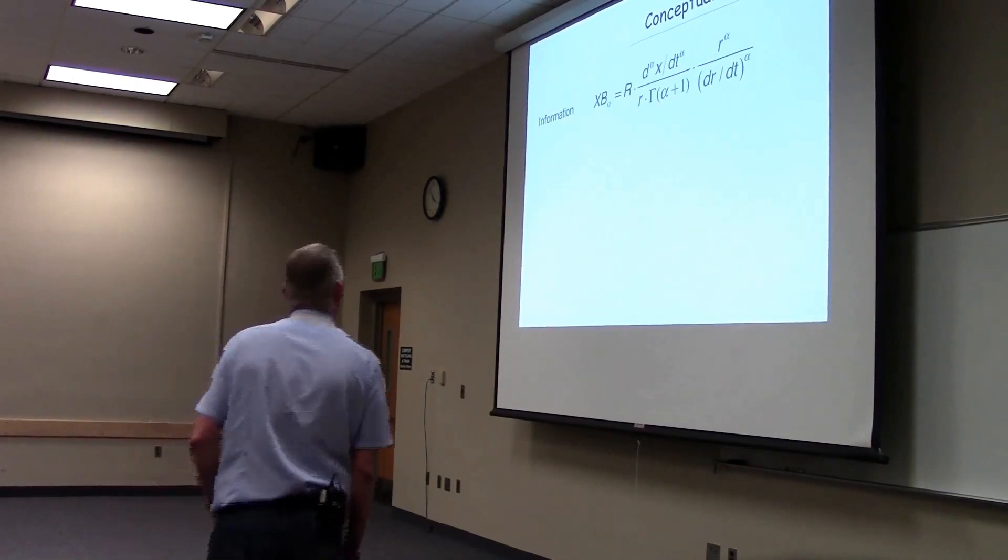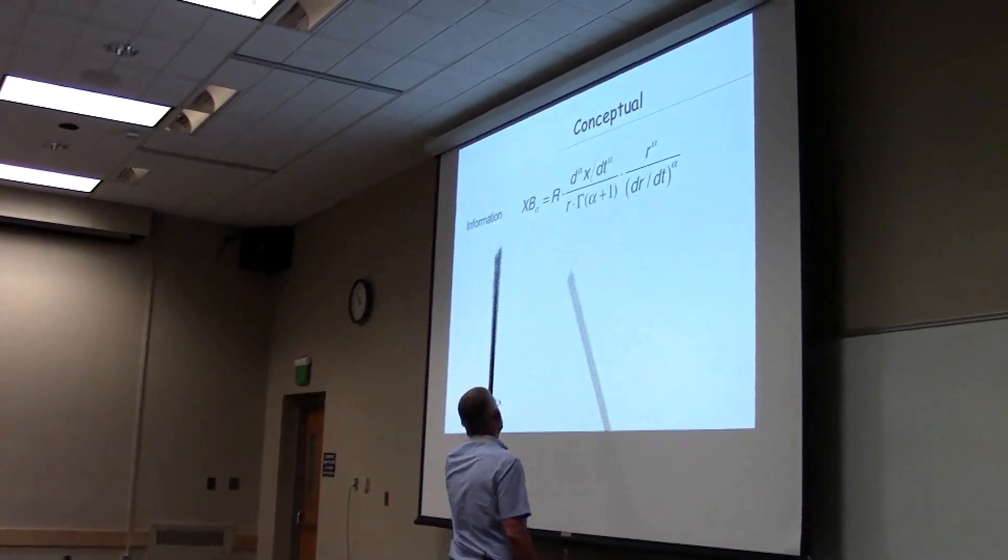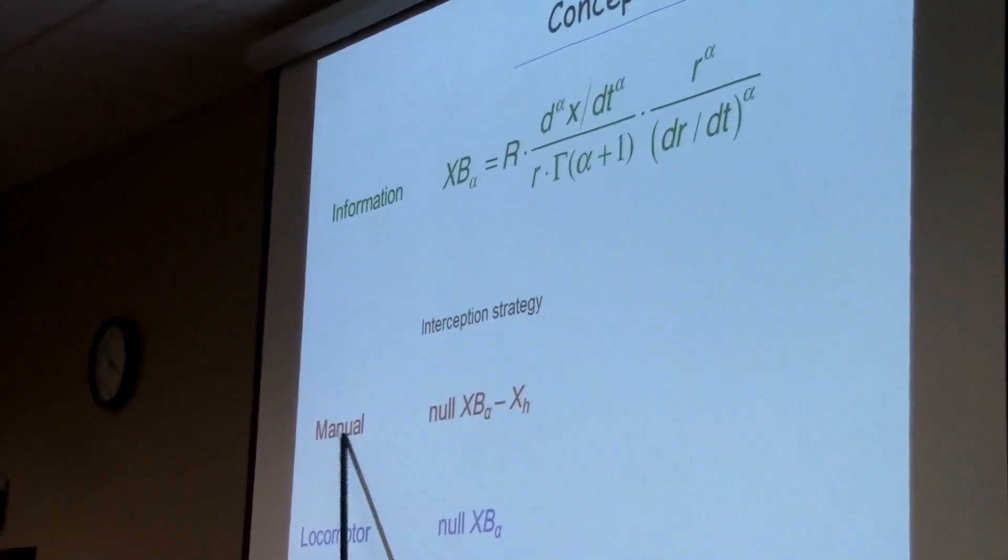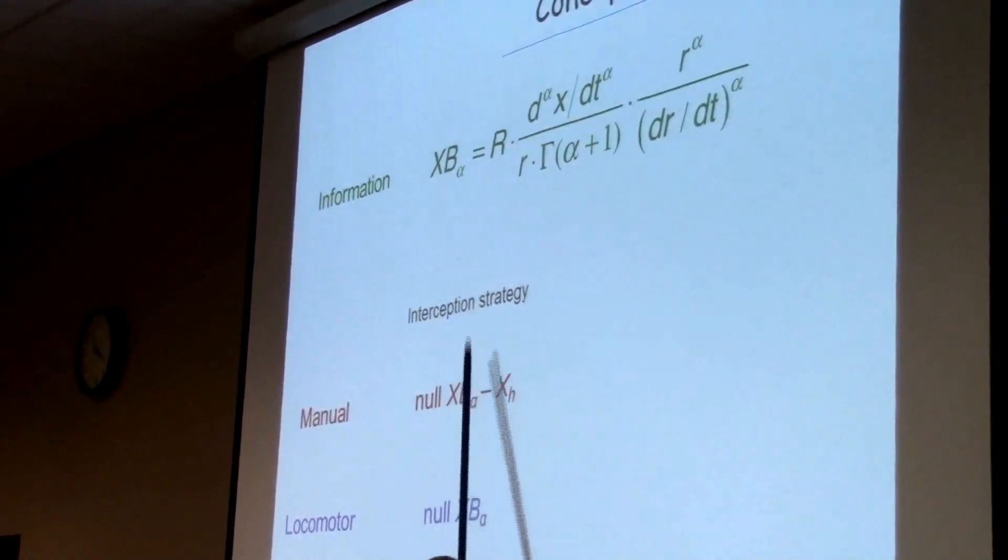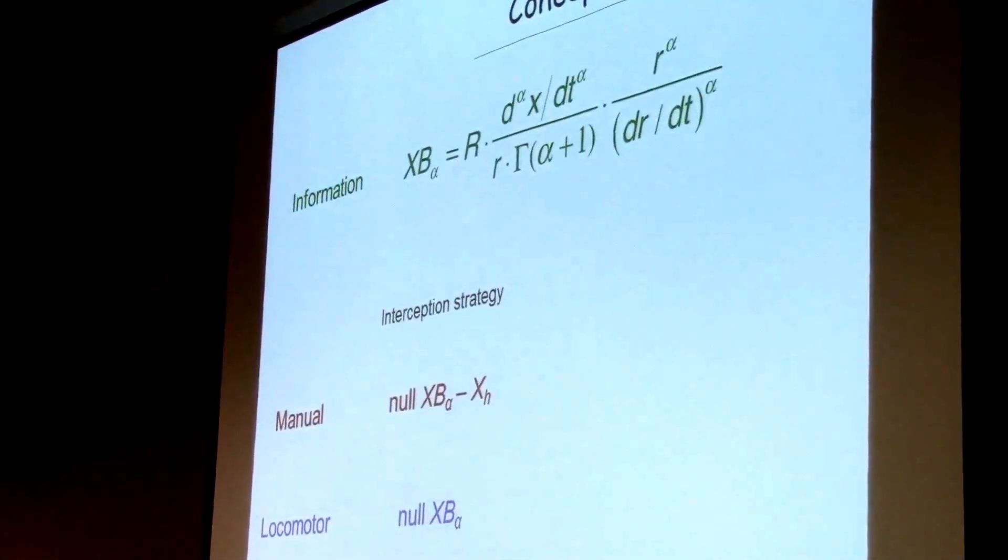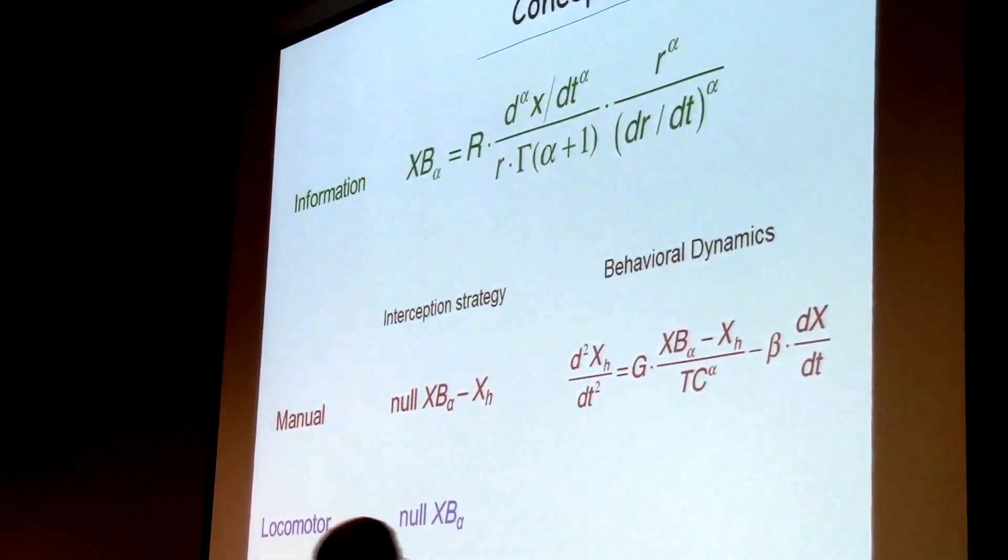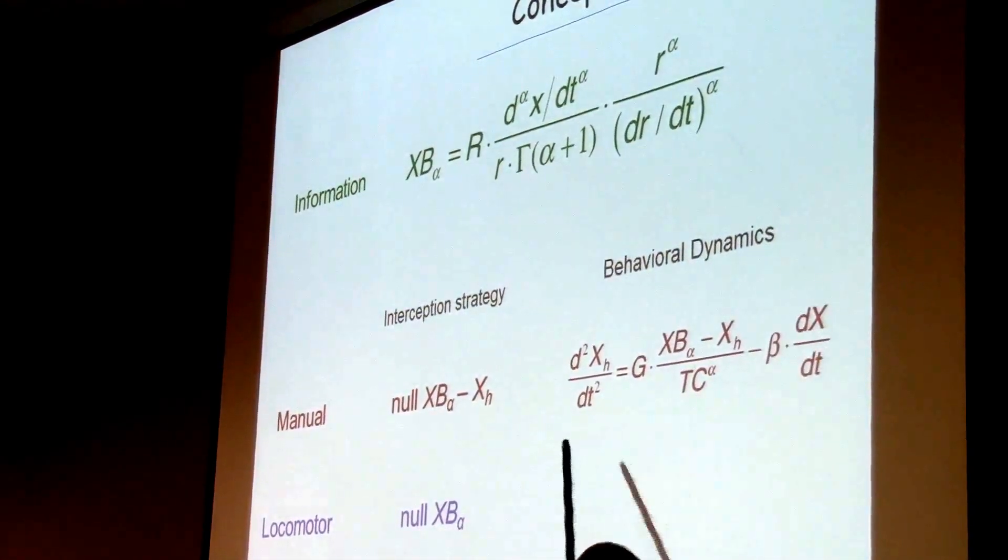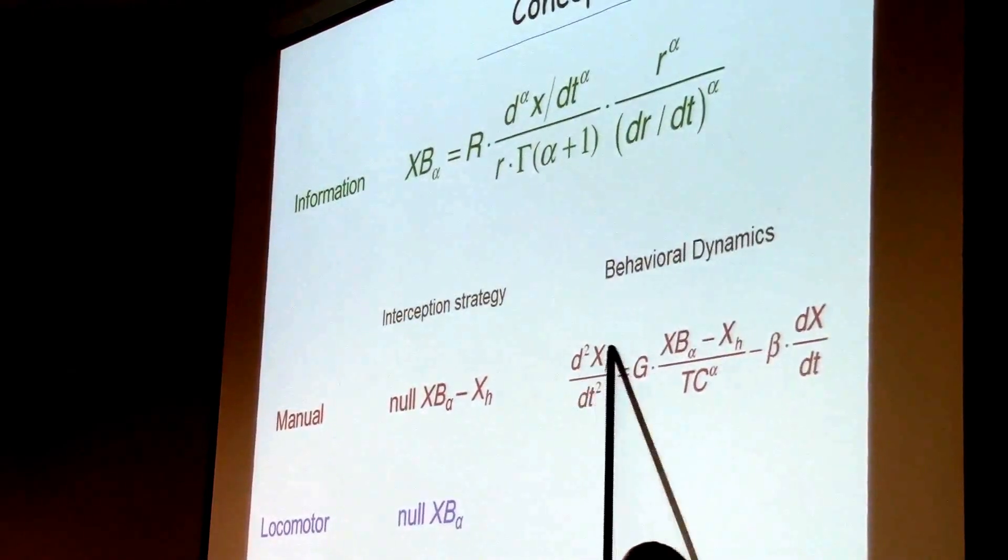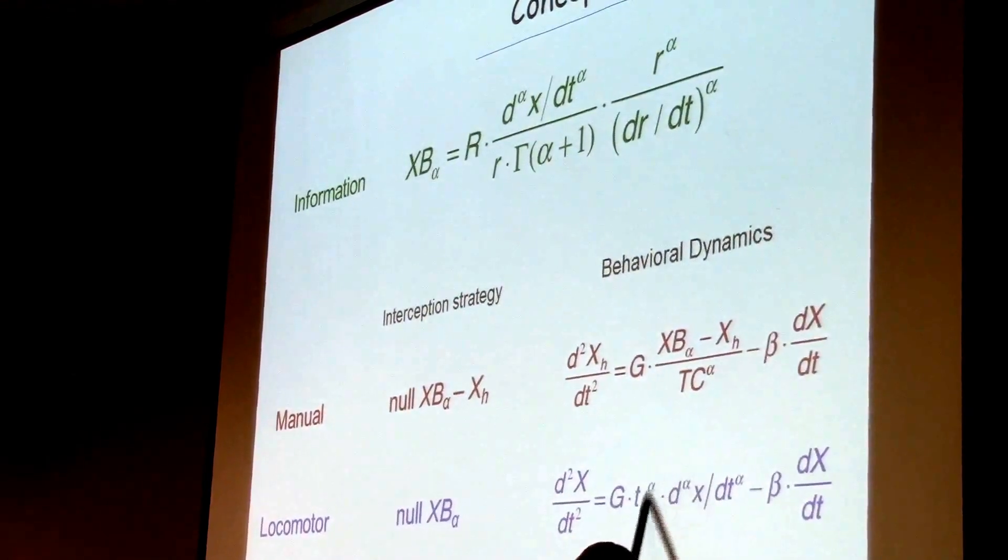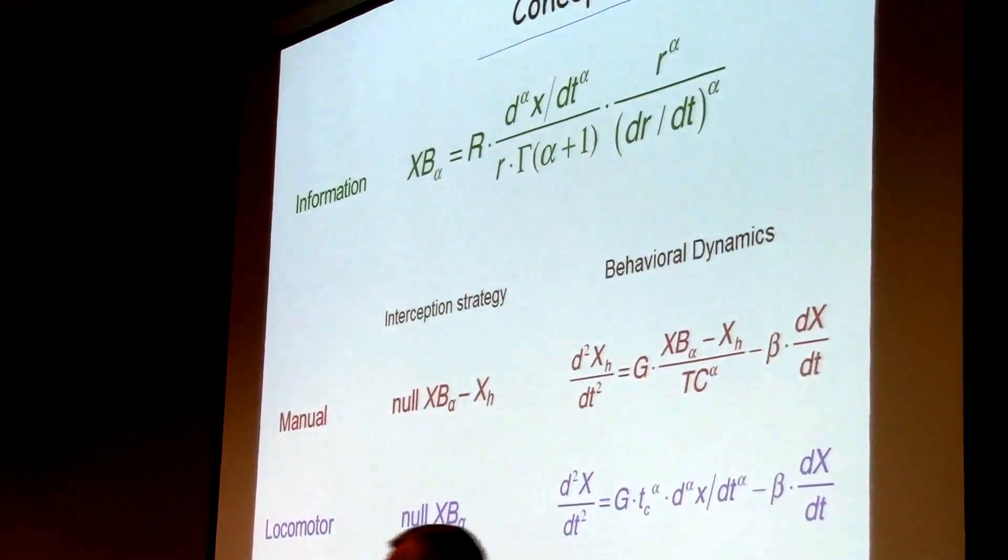So the order of that thing is fractional rather than integer. It spans the continuum rather than being limited to islands. And we will propose a movement initiation mechanism which is the same in manual interception and in locomotor interception that is based on the specified acceleration. The information tells you to accelerate. And that will be declining at an exponential rate over time. Conceptually speaking, this information source, the interception sweep in manual is getting your hand to where that point is. In locomotor, it's nulling it. The behavioral dynamics have the same form except that in one case your hand is moving and you're nulling this. And in the locomotor case, you're nulling the alpha derivative.